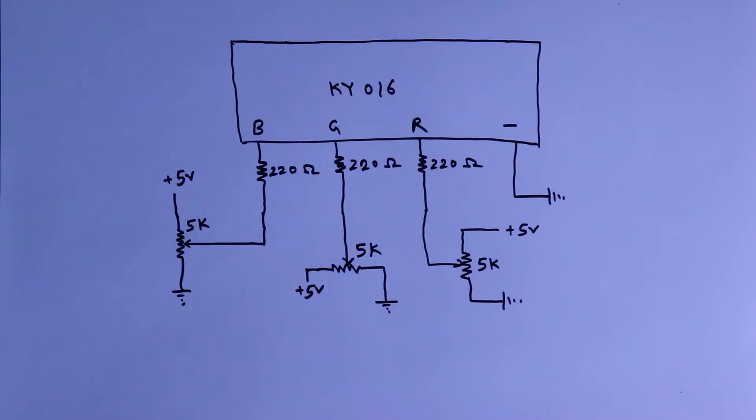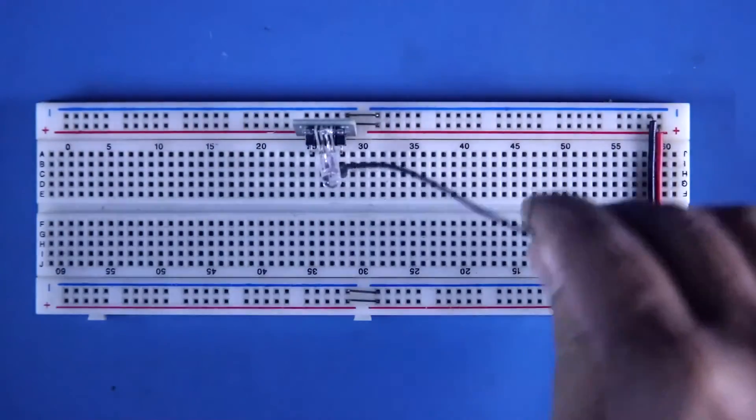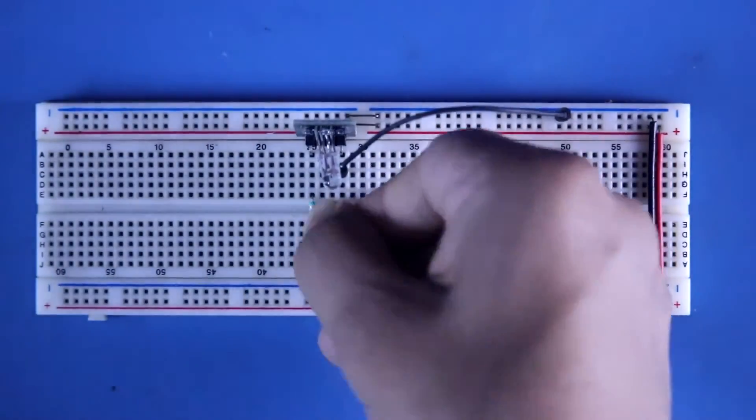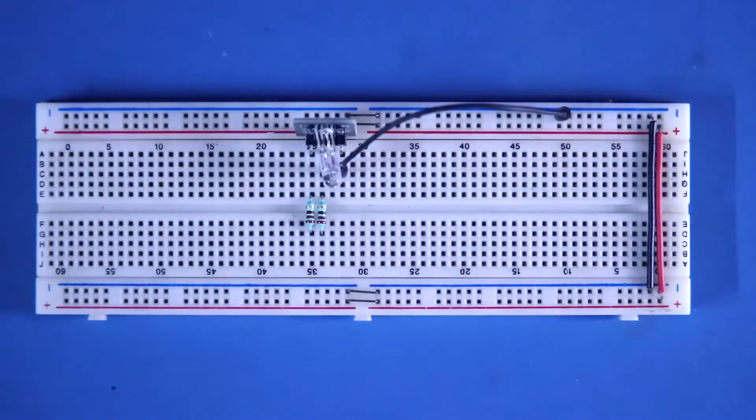Now we will connect this to the breadboard. Connecting the negative pin to the negative rail, with 3 positive pins, I am connecting 220 ohm resistor.